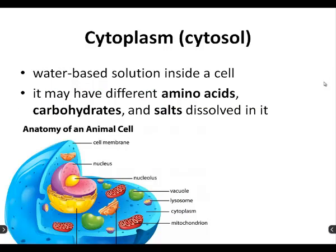The cytoplasm — this is a water-based solution inside the cell. It may have many different amino acids, carbohydrates, and salts dissolved in it. If the cell is a baggie full of water, this is all the water. Don't forget to get it on your bingo board as well. You may or may not see cytosol on the test — for the scope of this class, we'll consider them the same thing.